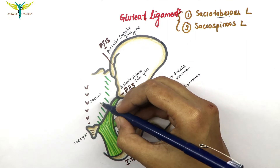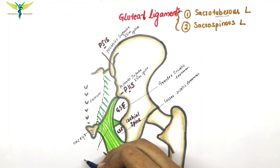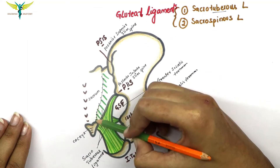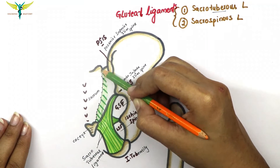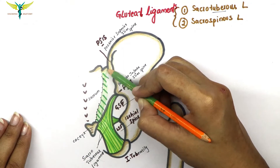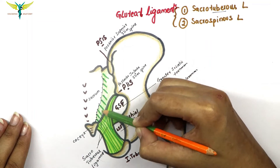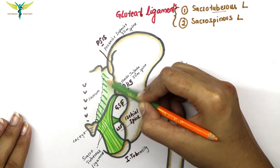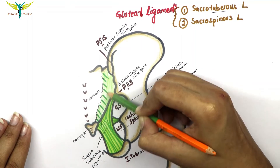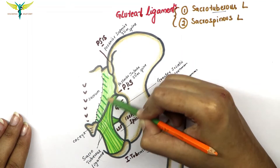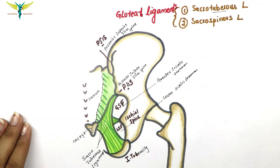In this diagram, this entire structure is the sacrotuberous ligament. The sacrotuberous ligament is a broad band of fibrous tissue which extends from the sides of the sacrum and the coccyx to the medial aspect of the ischial tuberosity. As you can note, it attaches medially to the ischial tuberosity.